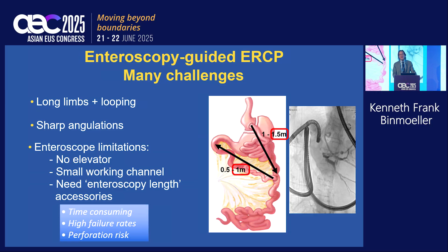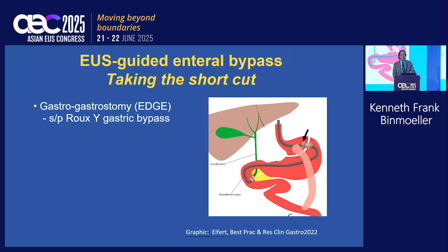So we always hated having to do deep enteroscopy. With EUS-guided enteral bypass, we can take the shortcut. In the United States, where there are many patients that are post-gastric bypass, we can perform a gastrogastrostomy, or the EDGE procedure. You can see that shown here, where we're able to enter into the remnant stomach from the pouch.